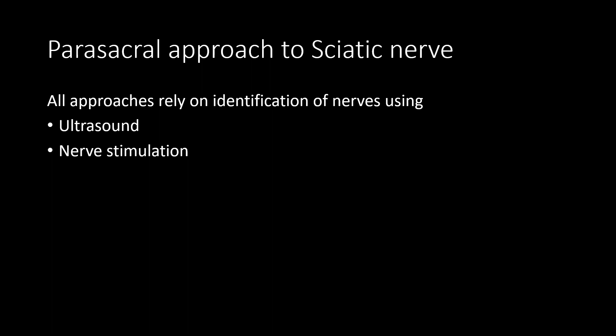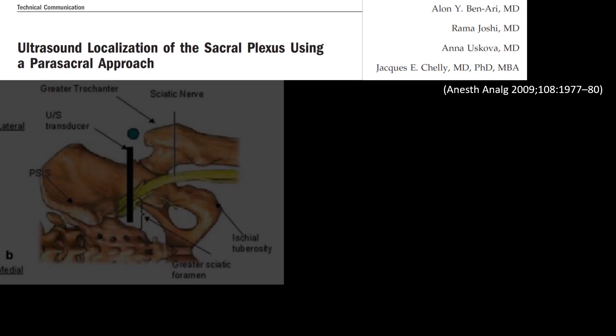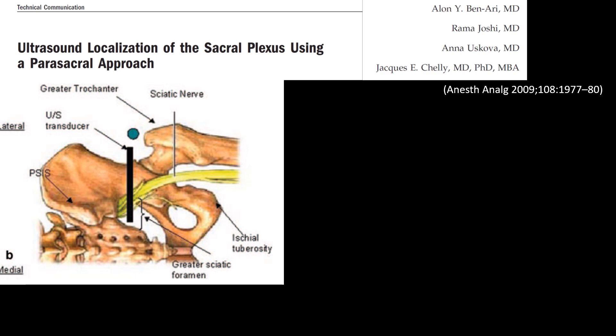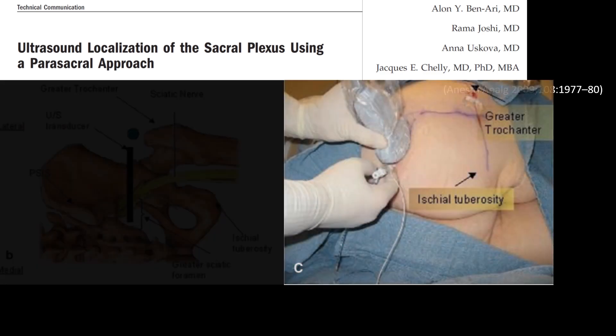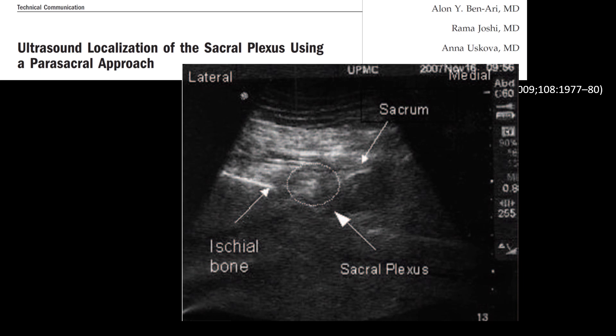Currently, all the parasacral approaches to the sciatic nerve rely on identification of the nerves using either ultrasound or nerve stimulation. The earliest description of an ultrasound approach to the sacral plexus was by Ben Ari et al. They placed the ultrasound probe caudal to the posterior inferior iliac spine and lateral to the sacrum, identified the sacral plexus between the ischial bone and the sacrum using a medial to lateral approach with concurrent nerve stimulation, and had a successful block in all cases.